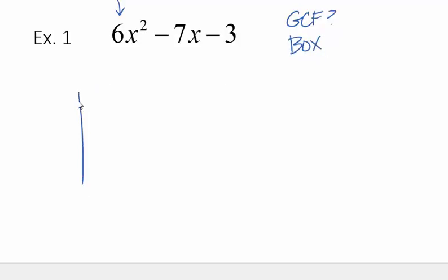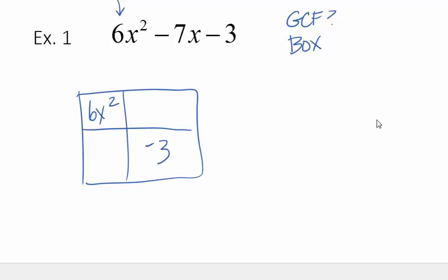So if I put this in the box, 6x squared and negative 3 here. Now I need to figure out, it's the same old method we've used before. A times C adds to B. So A times C here, A is 6, C is negative 3. So this is negative 18. And it has to add to the middle term, which is negative 7.